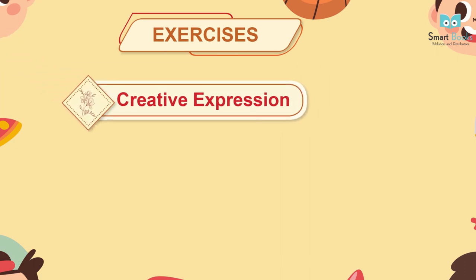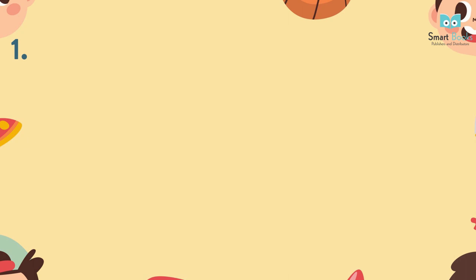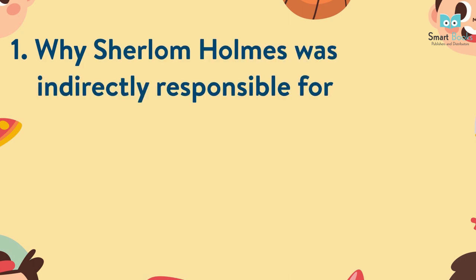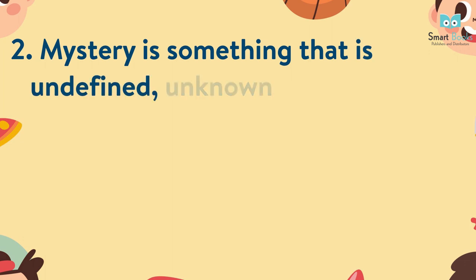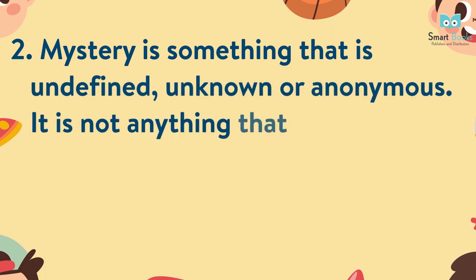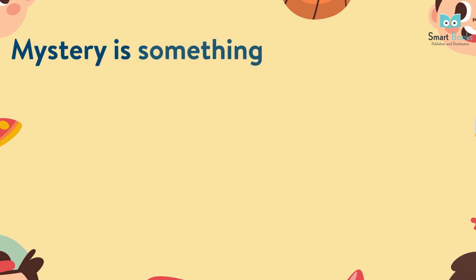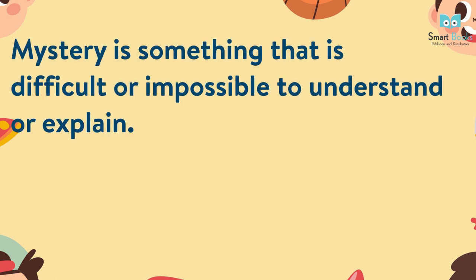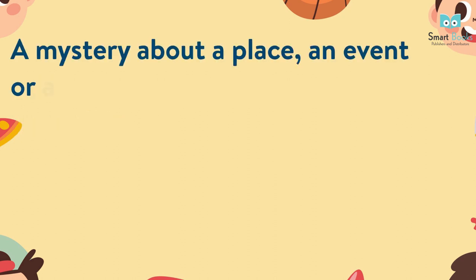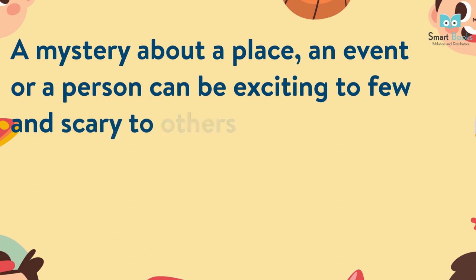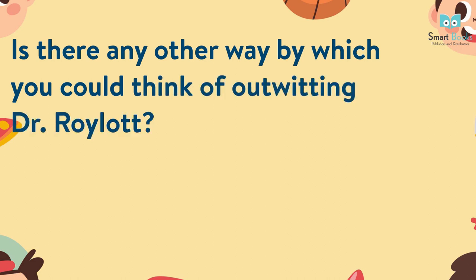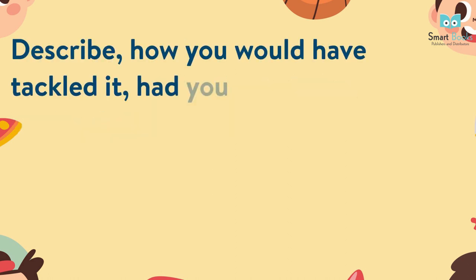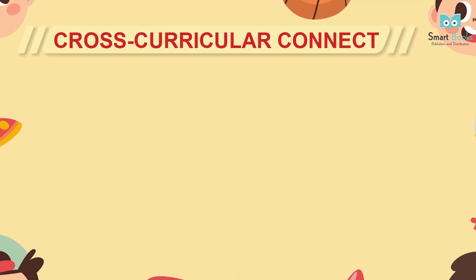Exercises — Creative Expression. Tell Your Story: 1. Why was Sherlock Holmes indirectly responsible for Dr. Roylott's death? Think and discuss your thoughts in class. 2. Mystery is something that is undefined, unknown or anonymous. It is not anything that is definite or specific. Mystery is something that is difficult or impossible to understand or explain. A mystery about a place, an event, or a person can be exciting to few and scary to others at the same time. Is there any other way by which you could think of outwitting Dr. Roylott? Describe how you would have tackled it had you been approached by Helen.